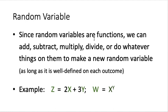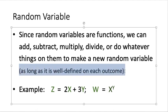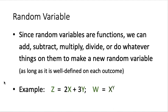This is something important because random variables are functions. Functions can be added, subtracted, multiplied, or divided, or we can do whatever we want to functions to create new random variables. One important thing to remember is that the new function we create has to be well defined on every outcome. For instance, suppose we have random variables X and Y — we can create a new one called Z equal to 2X plus 3Y. And we can even create something like W equal to X to the power Y. As long as X to the power Y is well defined for each possible outcome, then W will be a random variable.